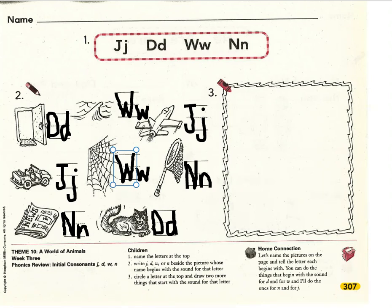Let's take a look at number three. For number three, I'd like you to pick your favorite letter from J, D, W, or N. Circle your favorite letter. With whatever letter you circled, I'd like you to draw two more things that start with that sound that are not already on your page. For example, my favorite letter is D — I could draw a duck and a dinosaur, which are not on my page already. Please pause the video, pick a letter, and draw two more things that start with that letter. Then unpause so we can work on the backside together.